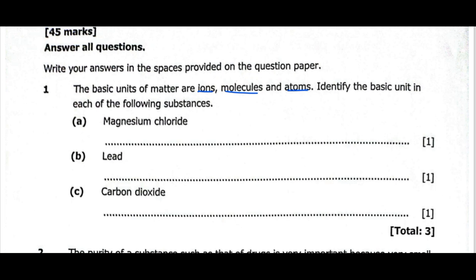If we look at the first substance here, we have magnesium. Magnesium is a metal, then chloride, which is chlorine, is a non-metal. Whenever we have a compound that consists of a metal and a non-metal, we have what we call an ionic compound. In an ionic compound, we have ions — positive ions and negative ions. So the answer for this one is ions. The ions are in magnesium chloride.